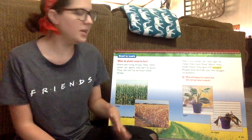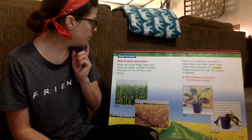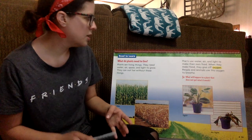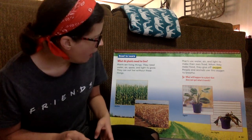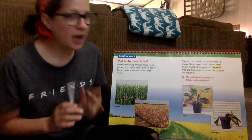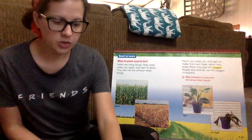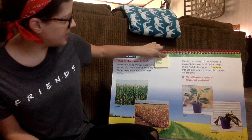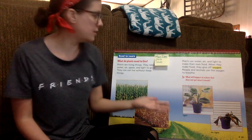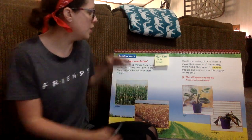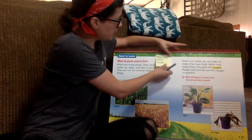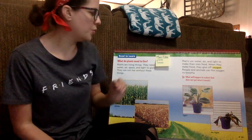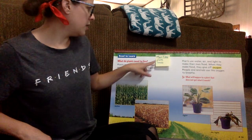So I'm thinking about the main idea — what is this mostly about? It's telling me plants need water, air, space, and light. When they get these things, they make their own food. So I think the main idea is what plants need. I'm going to put right here at the top: main idea — plants' needs. This is what they need to grow and to flourish and to turn into healthy plants. That's what this is mostly about.